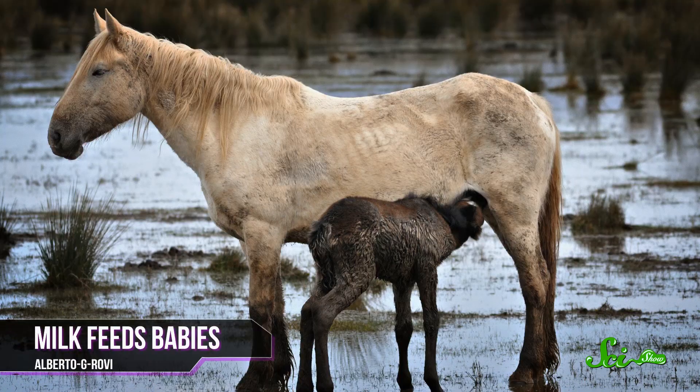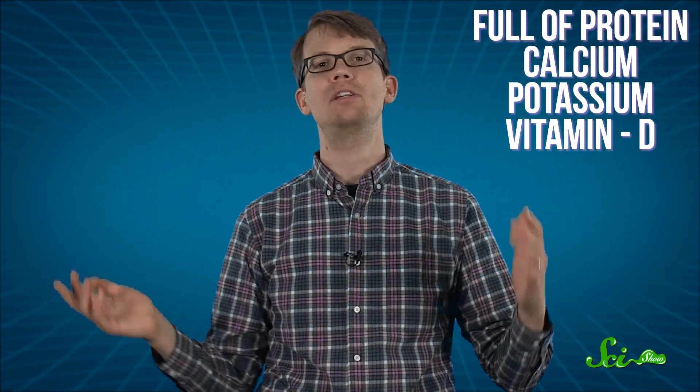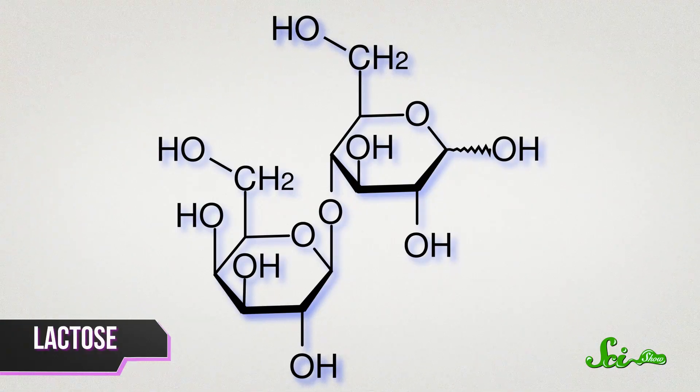Milk is produced by mammalian mammary glands, mainly to feed babies until they can digest other foods. Although milk is very nutritious, full of protein, calcium, potassium, vitamin D, it's also full of lactose, or milk sugar, which can be hard to digest.